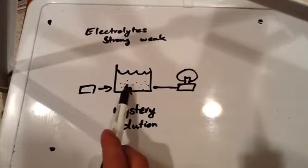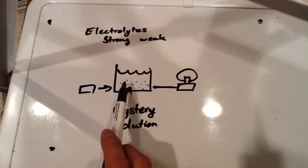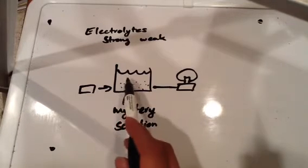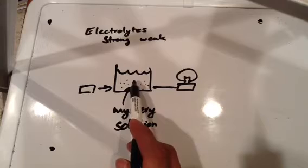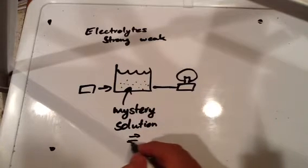But if we have a weak electrolyte, we're not going to have as many ions out there. We're going to have some parts that are still kind of clumped together, and some of it is going to be in ions. So we'll basically show that it's a reversible kind of thing.